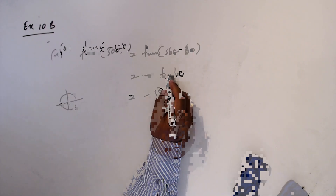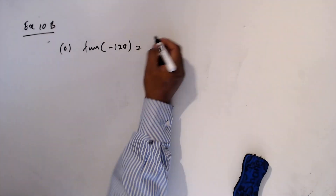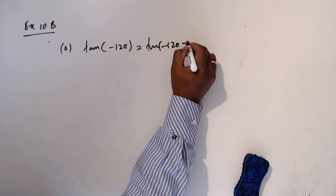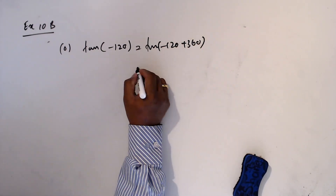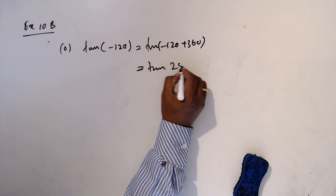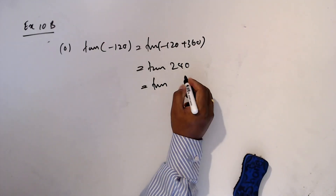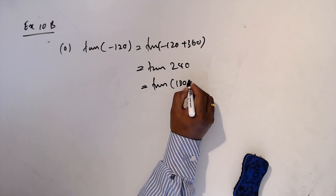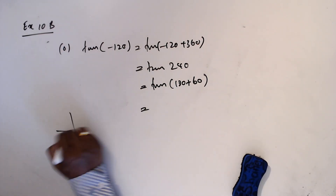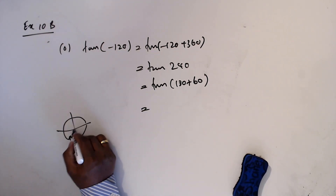Tan 300 equals tan(360 minus 60). In the fourth quadrant, tan is negative, so the answer is minus tan 60, which equals minus square root 3. Tan minus 120: adding 360 gives tan 240, which is tan(180 plus 60), in the third quadrant where tan is positive, giving tan 60 equals square root 3.